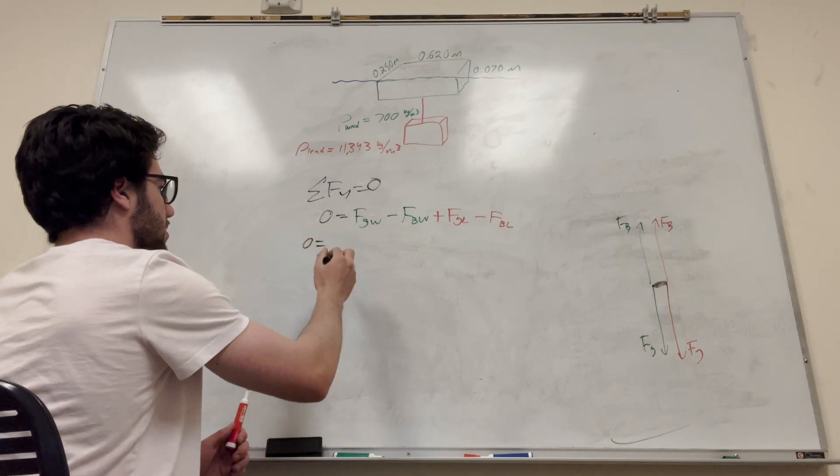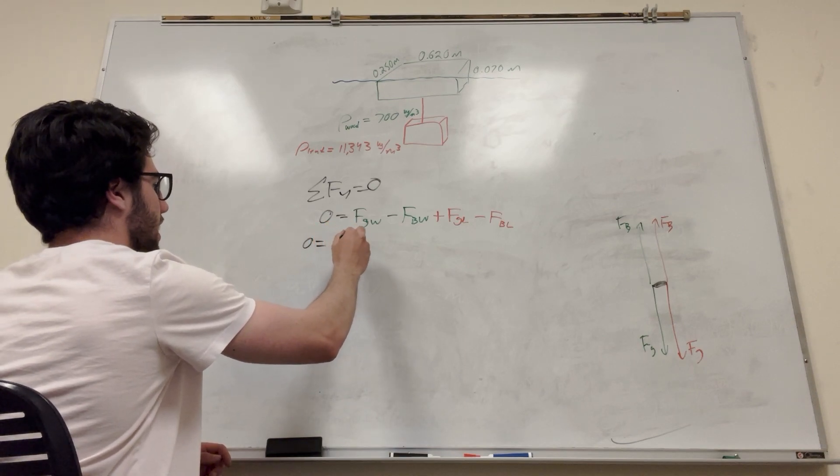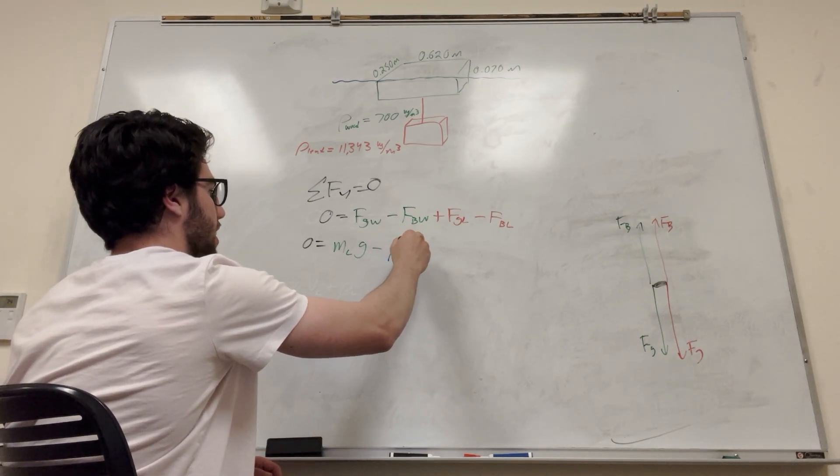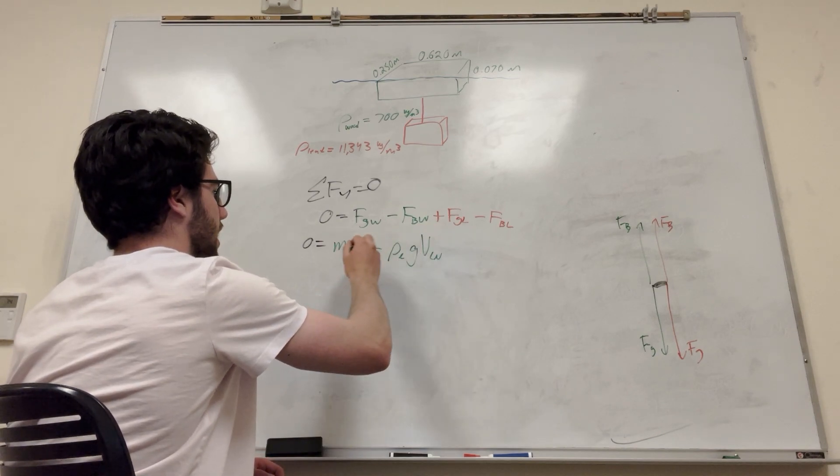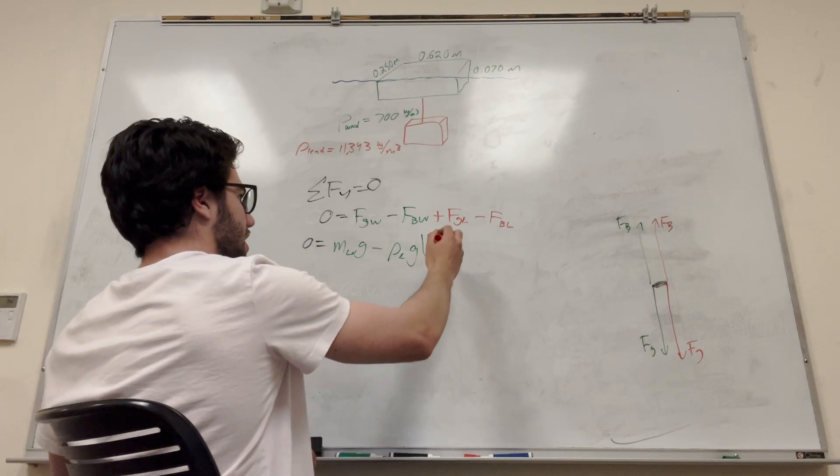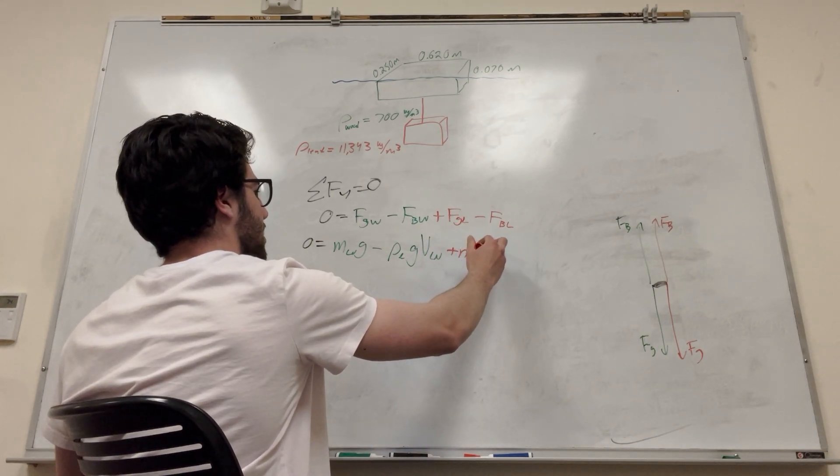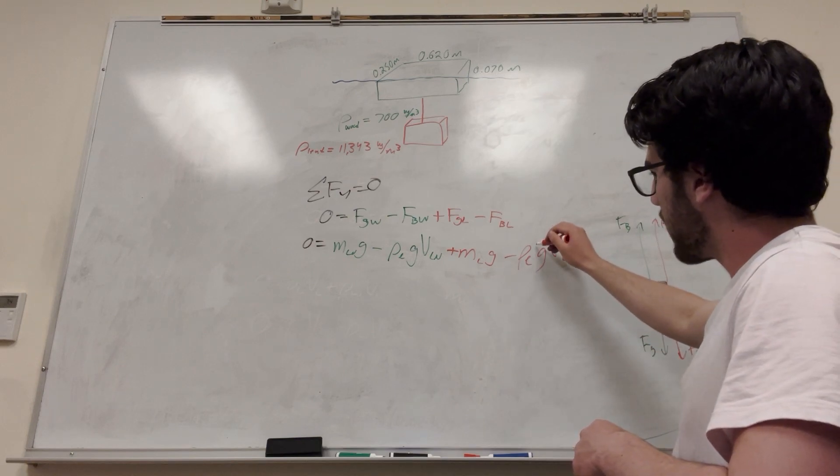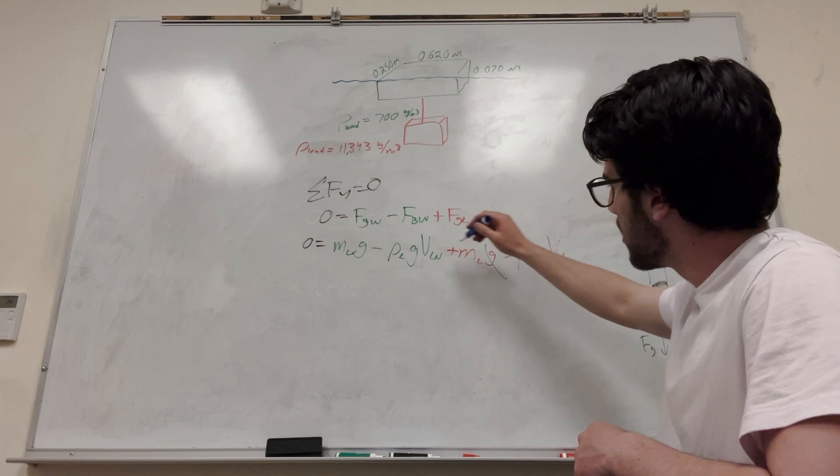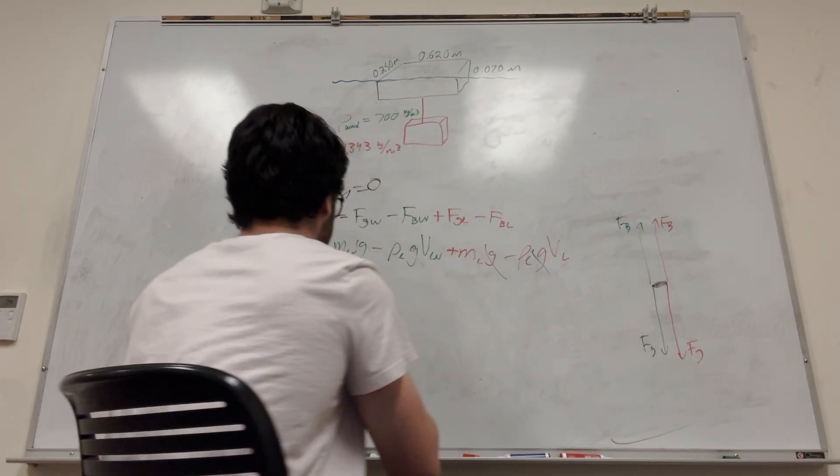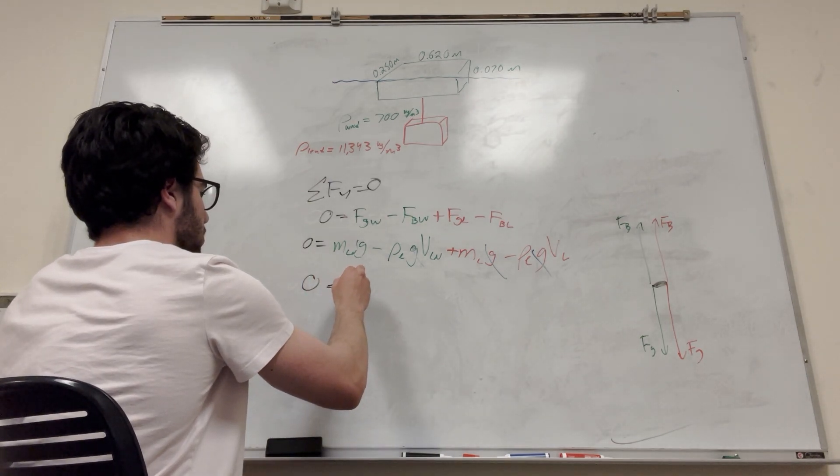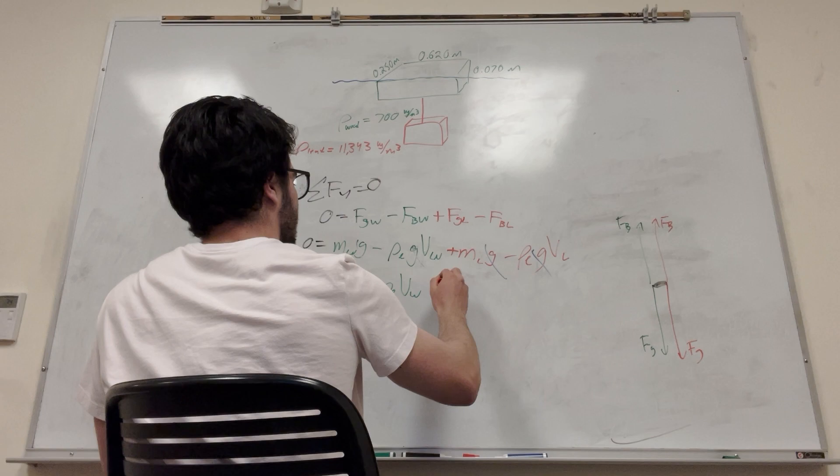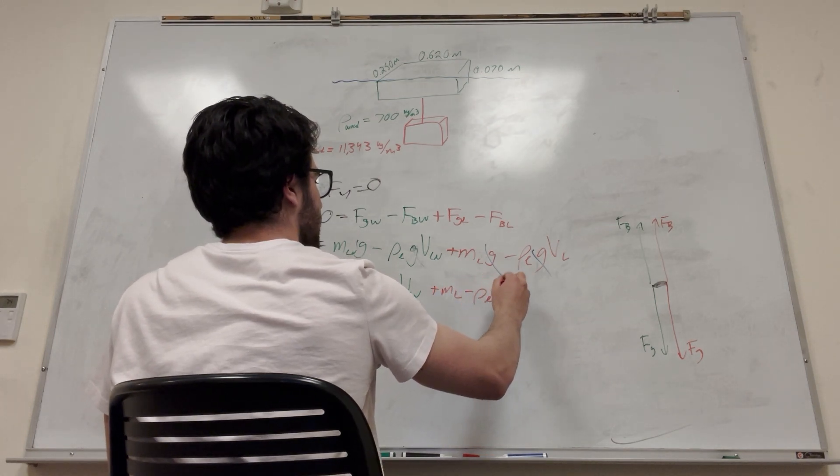So zero is equal to, so it's going to be mass of the lead times gravity minus the force buoyancy is going to be the density of the liquid times gravity times the volume of the wood. So then over here, of course, force gravity is the mass times gravity, and then minus density of the liquid, gravity times the volume of the lead. So of course we have all these gravities. These gravities are going to cancel and just leave us with a more simple equation.